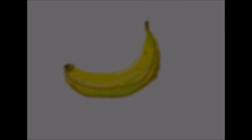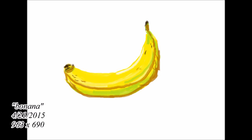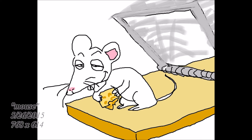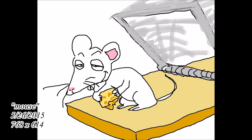Bofa is a still life I made depicting two peanuts colored with the brush tool. It is meant to tell the joke Bofa Deez Nuts visually. Bonana is another still life I made as a sort of practice to see how close I could get to making a realistic looking banana, and it is also colored with the brush tool. This piece, titled Mouse, depicts a mouse after he has taken the cheese from a mousetrap with a satisfied look, but little does he know he is about to face the consequences of his actions.